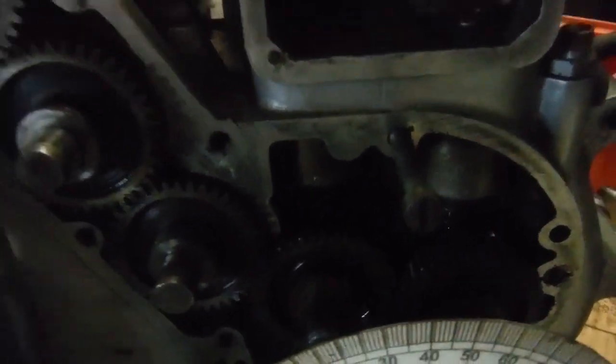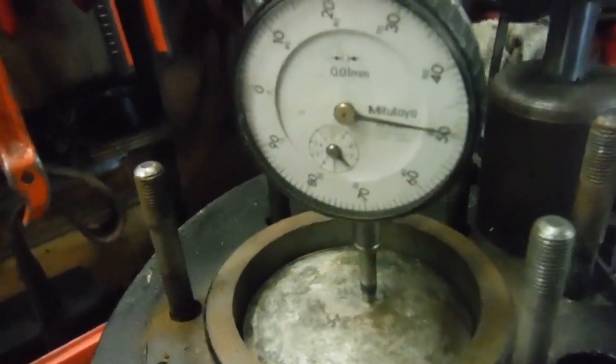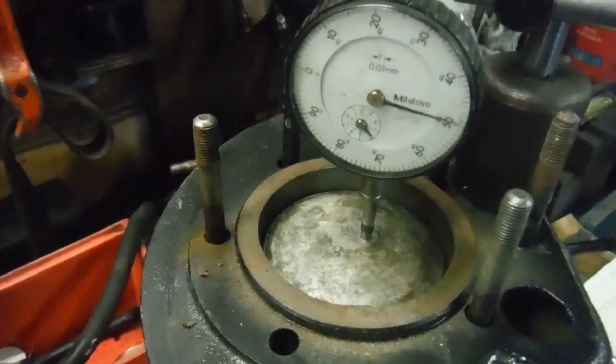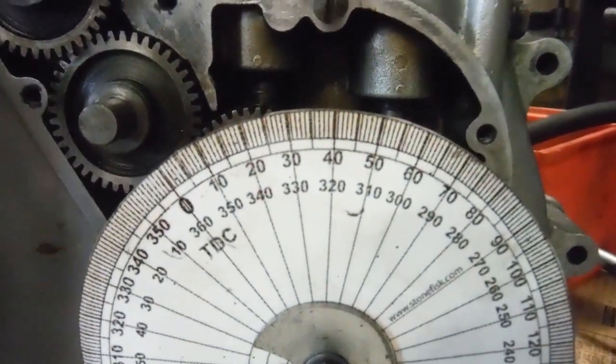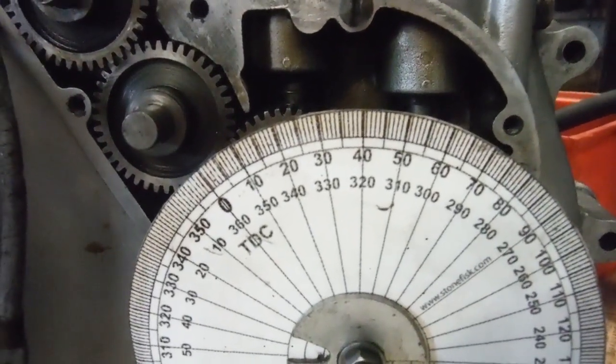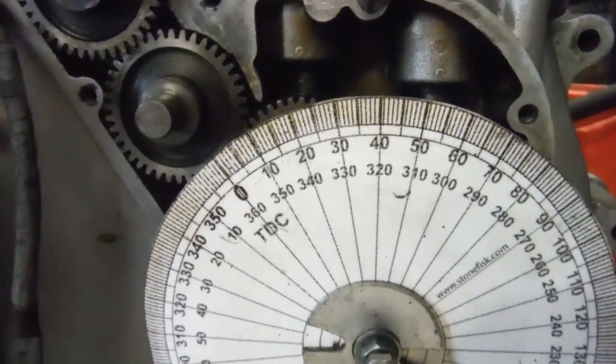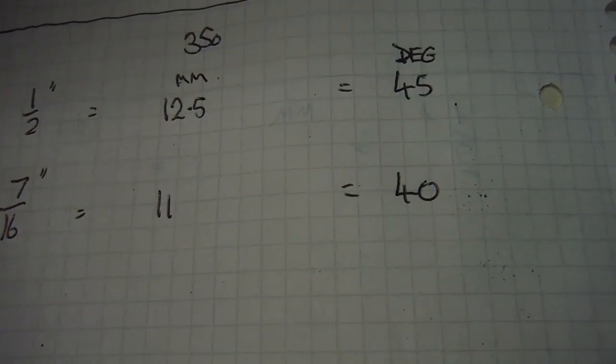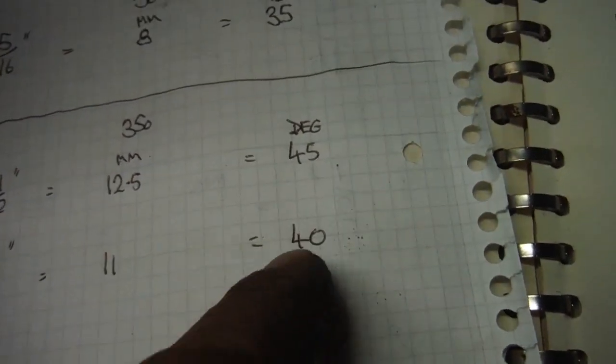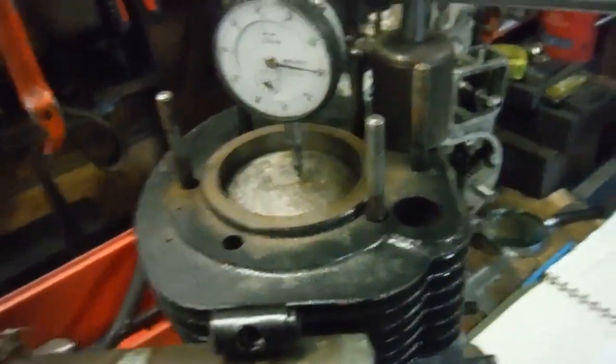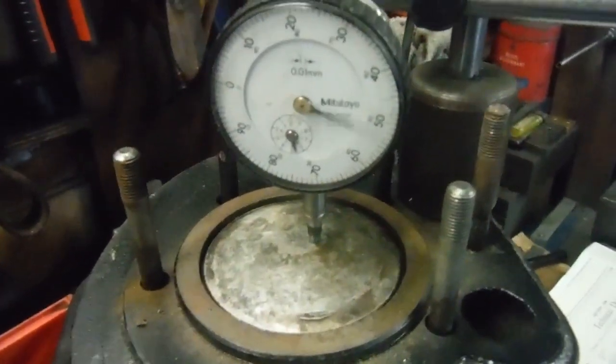And there we are, we're 40 degrees there before top dead center, perhaps a very slight whisker. There are the actual figures, so we are 11 millimeters before top dead center there, and that's what the degree wheel is giving us. I would say 38 or 39 degrees before top dead center, so we've got 40 written there. If I turn the engine forwards again, obviously the clock's going to top out.